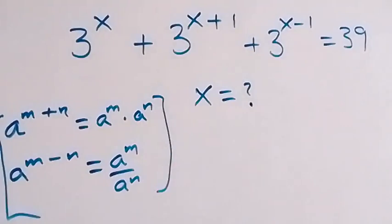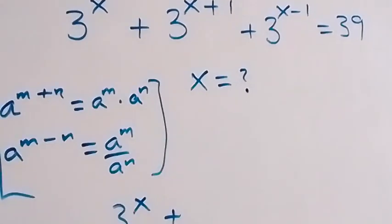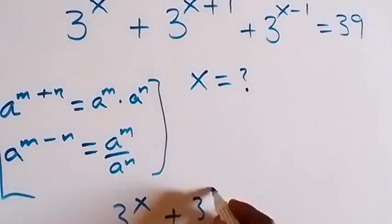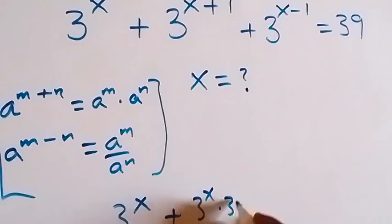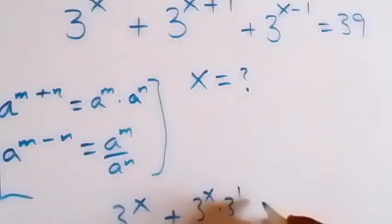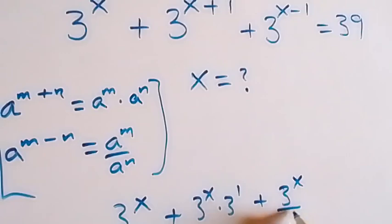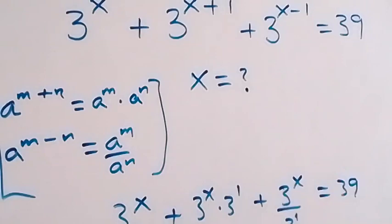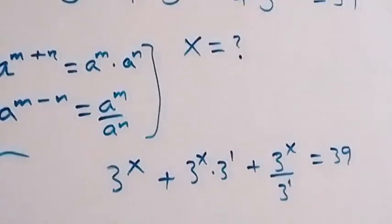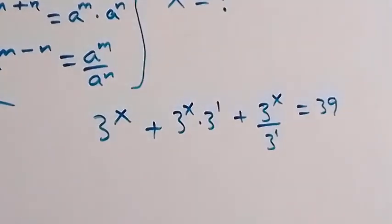This still remains 3 raised to power x. Then, we can write 3 raised to power x plus 1 as 3 raised to power x times 3 raised to power 1. And we can write 3 raised to power x minus 1 as 3 raised to power x over 3 raised to power 1, and this equals 39. Here, 3 raised to power 1 is the same thing as 3. Then, we have 3 raised to power x common here.